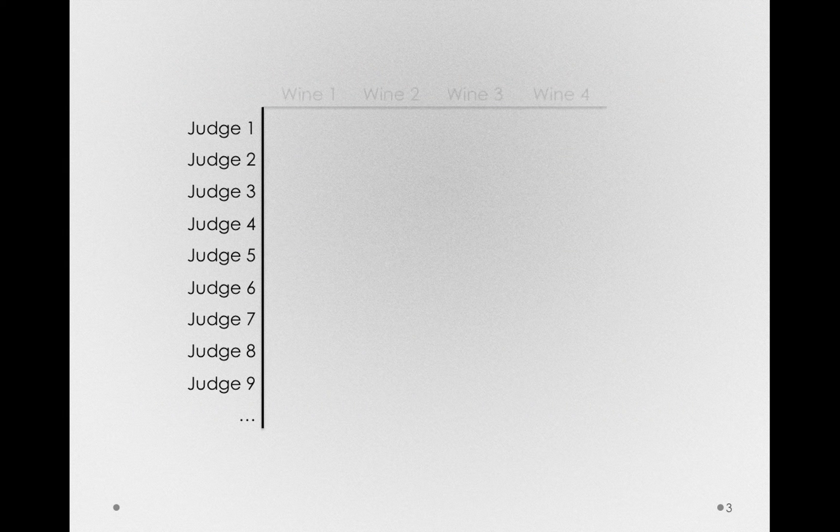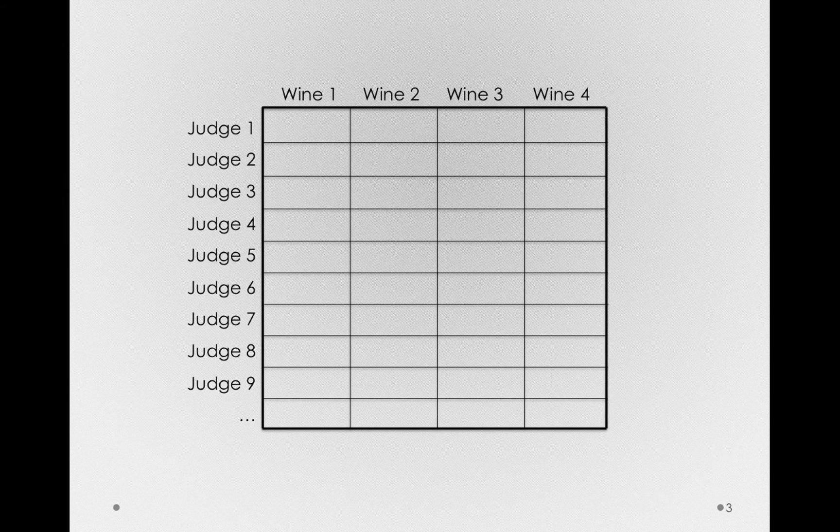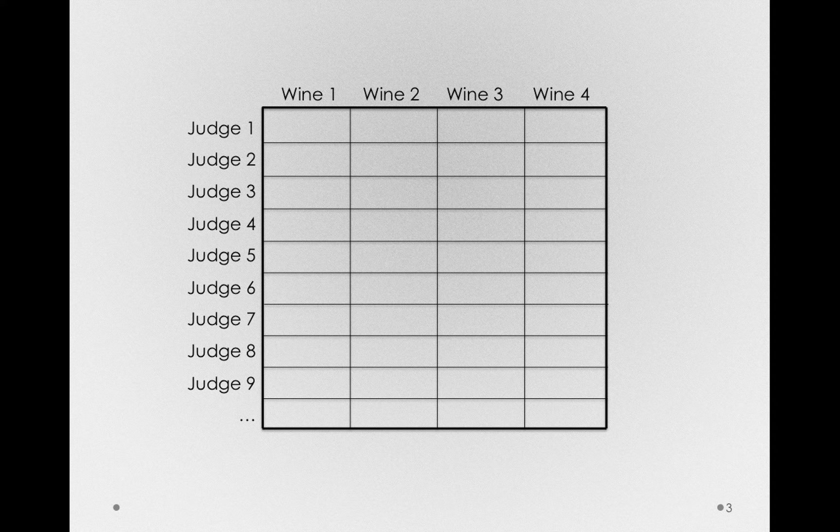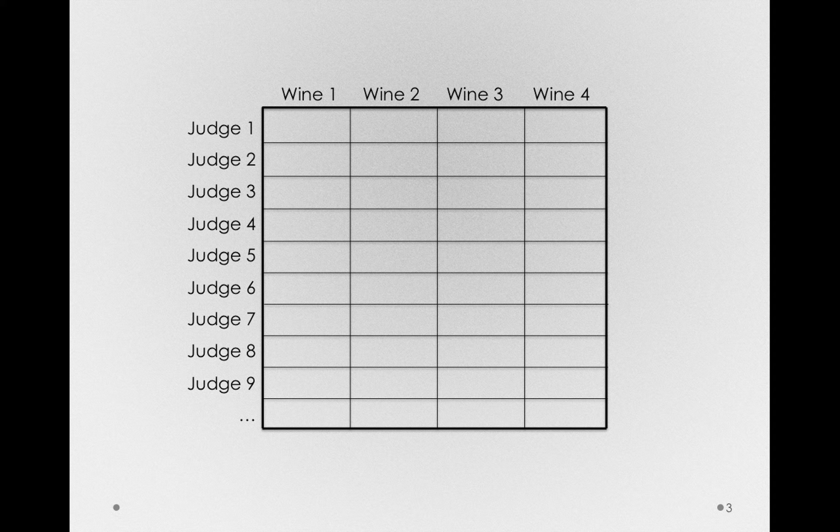Alright, so let's start with our example. Imagine we have a number of different judges, and we're going to ask them to make ratings of four different wines. What we'll end up with is a grid of responses, where each judge will give us four different observations.